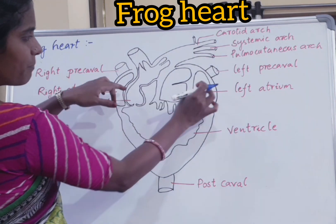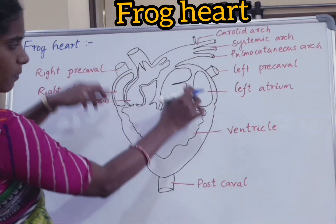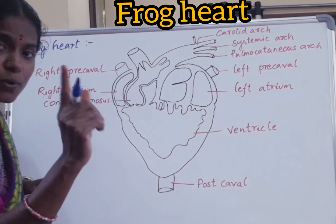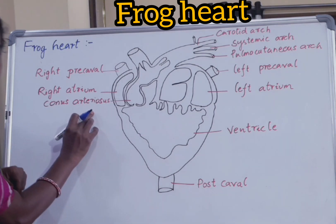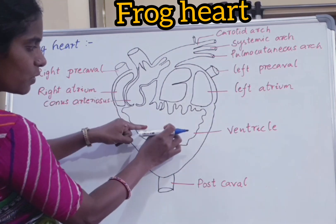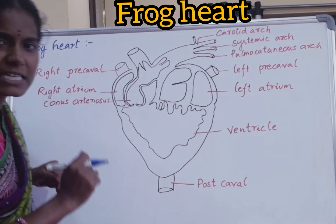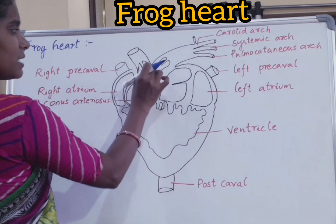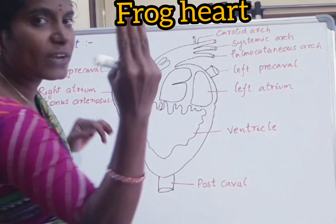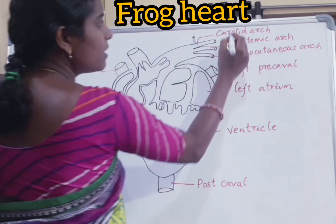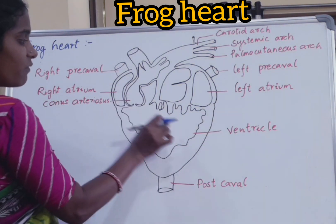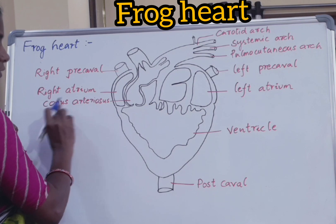The blood from the left atrium and right atrium opens and pours into the ventricle. The ventricle consists of one and only opening, that is the conus arteriosus. The conus arteriosus bifurcates into two branches and splits into three different arches — they are the carotid arch, systemic arch, and pulmo-cutaneous arch.